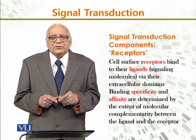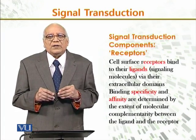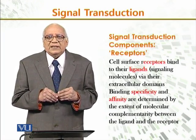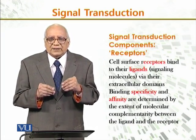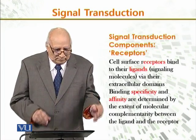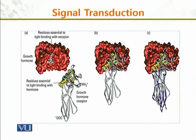Molecular complementarity means — just as in the enzyme we have the lock and key model where those things fit — similarly, the signal has to fit to the affinity or the complementarity between the ligand and the receptor molecule, which is developed on the outside of the cell. For example, a growth hormone gives signals and binds with residues essential for the right binding with the hormone. There are amino groups and a hydroxyl group at the bottom, and it joins together to make a complete module where it fits into the growth hormone and makes signaling possible.